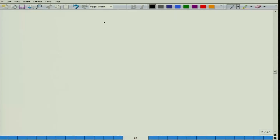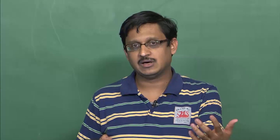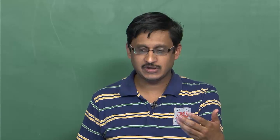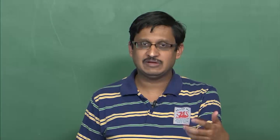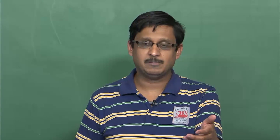Let us begin by looking at lumped circuit impedance matching. Lumped element circuit impedance matching is normally used at lower frequencies, in the range of a few tens to hundreds of megahertz. With some fabrication expense you can push this up to 2 to 3 gigahertz. Beyond this, fabricating the corresponding inductances and capacitances becomes prohibitively expensive, so you simply go over to transmission line matching or distributed circuit matching.